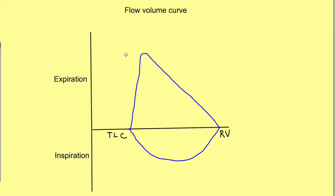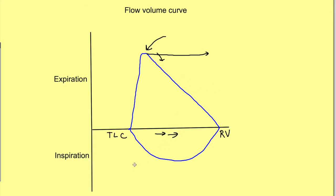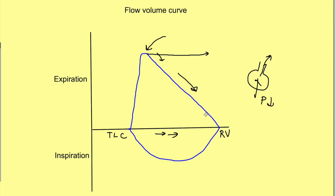With maximal effort, flow reaches a maximum limit and then flow rate decreases. But why does flow rate keep decreasing rather than remaining constant until residual volume? As lung volume decreases, the recoil of the lungs decreases. If lung recoil decreases, alveolar pressure will be less, the driving force is less, and hence the flow rate is less. That is why with decreasing lung volume, flow rate decreases due to decreasing recoil of the lungs.